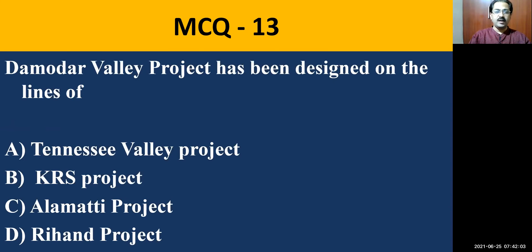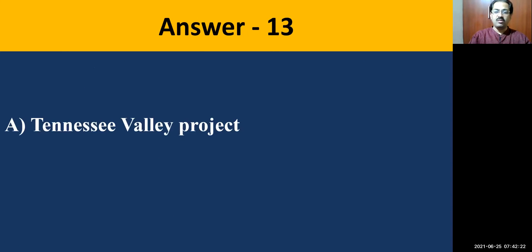MCQ number thirteen: Damodar Valley project has been designed on the lines of — Tennessee Valley project, KRS project, Alamatti project, or Rihandh project. The correct answer is Tennessee Valley project of America. Also, the Damodar project is the first multipurpose project of the entire nation after independence.